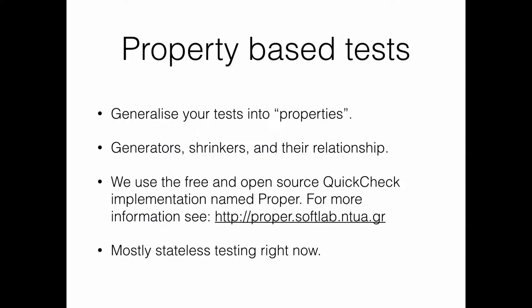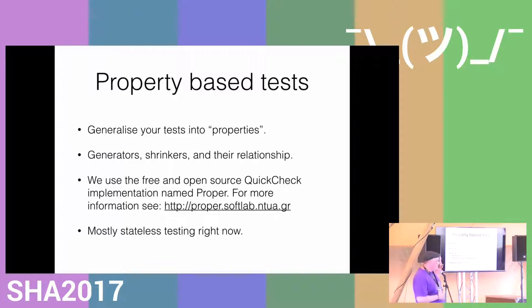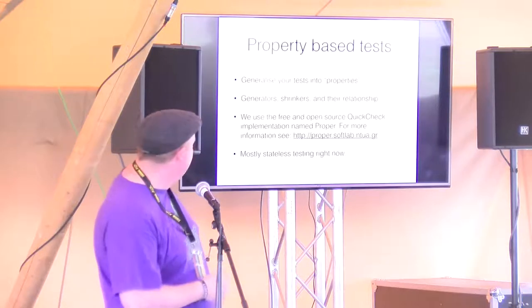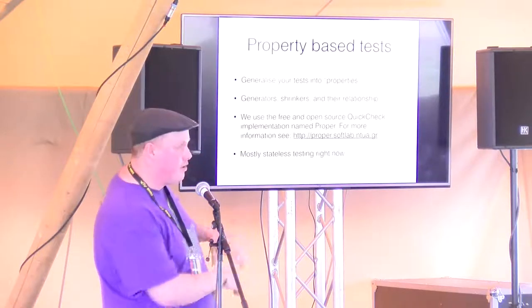We also use property-based tests, where we generalize our tests to test properties instead of direct values. You have a generator which produces a random value of a specific type, and a shrinker attached to it which shrinks toward some zero value — for a list type towards the empty list, for an integer towards zero. We use a free implementation of this; there's a proprietary QuickCheck by a Swedish company that costs about 5,000 euros a year which we cannot afford. Right now we mostly use it for stateless testing, though with QuickCheck you can also do stateful protocol testing, which we plan to use.